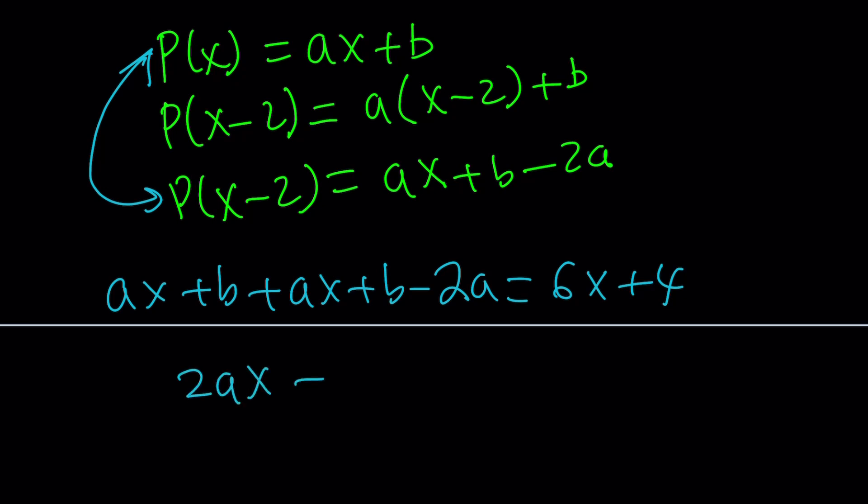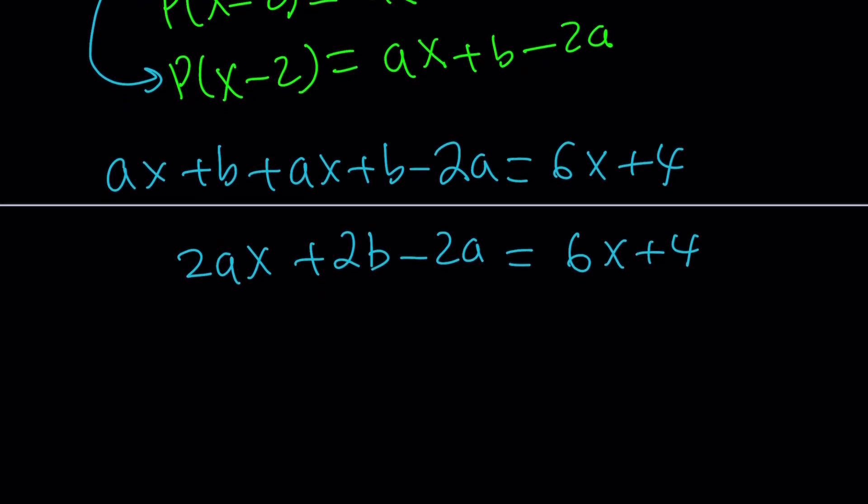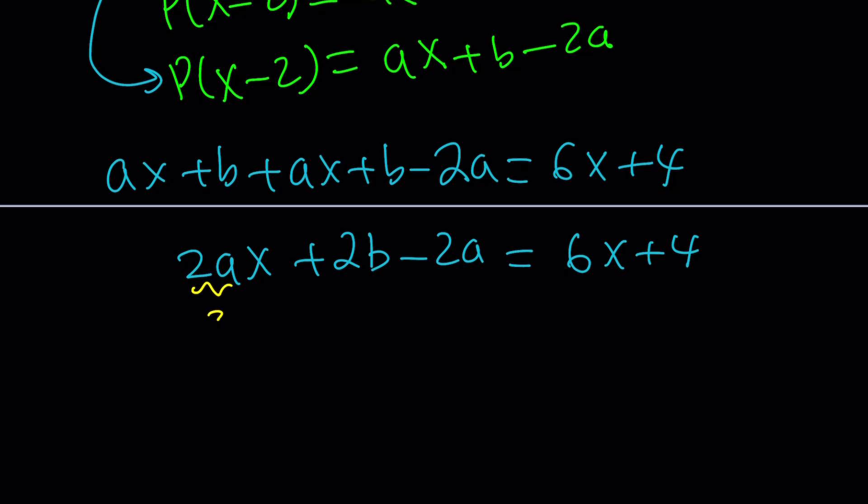2ax + 2b minus 2a = 6x + 4. This implies, since this is a true statement for all x values in the domain, which is a set of real numbers, 2a = 6, and 2b or not 2b minus 2a is equal to 4.